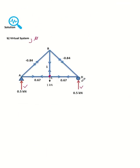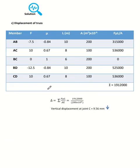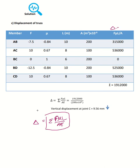After obtaining both the virtual system and the real system values, we draw a table to find the displacement. The displacement formula is the total of: real system (F) times virtual system (μ) times length (L) divided by AE. Draw a table with columns for member, real system, virtual system, L, A, and E.